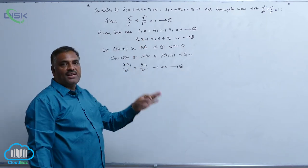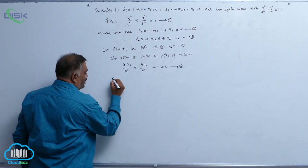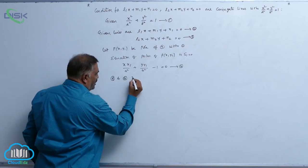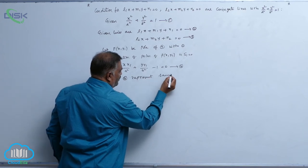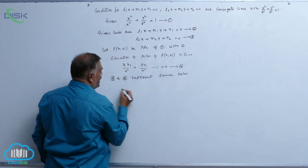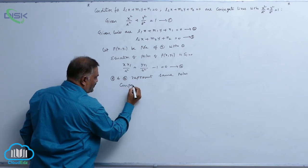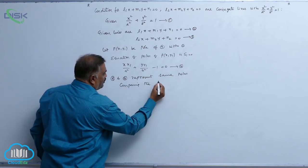2 and 4 represent one and the same line. 2 and 4 represent same pole r. So, immediately you can write, comparing the coefficients, we will get